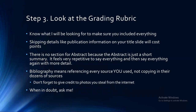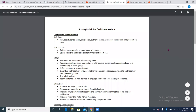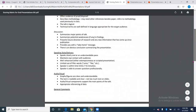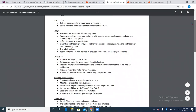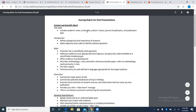Step three is to look at the grading rubric — I am going to use this rubric to grade your presentation. If you look through and see things your video didn't include, you're going to lose those points. On the title slide, you need your student name, the article's title, the author's names, the journal publication, and the publication date. If you're missing any of those, you're going to lose points.